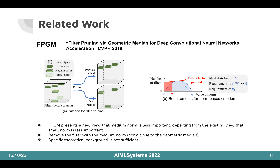The second one is FPGM, presented at CVPR 2019. Traditionally, the filter weight with a small norm was regarded as a less important filter. FPGM introduces a new perspective that the median norm filter is less important. It achieves good performance. However, the specific theoretical background of how it works well is not sufficient.